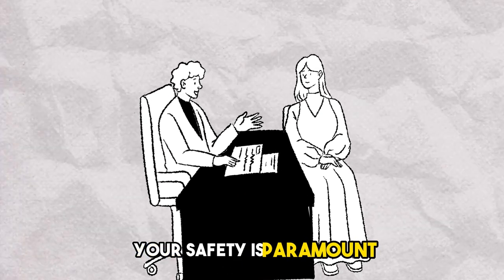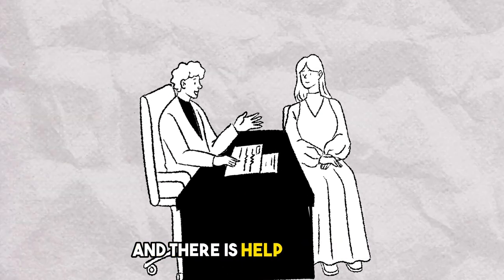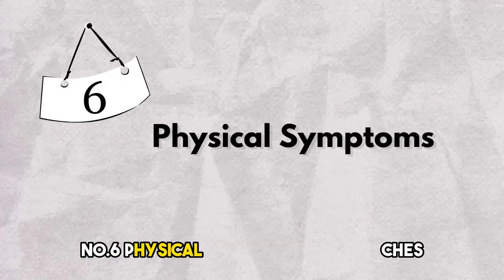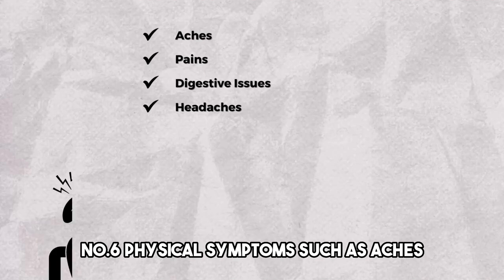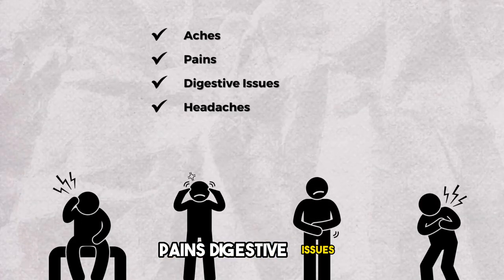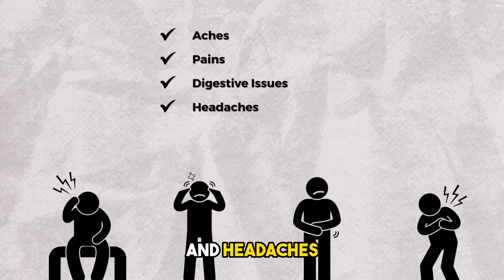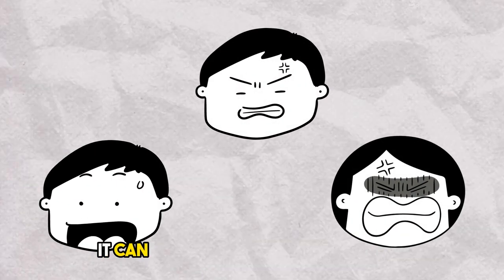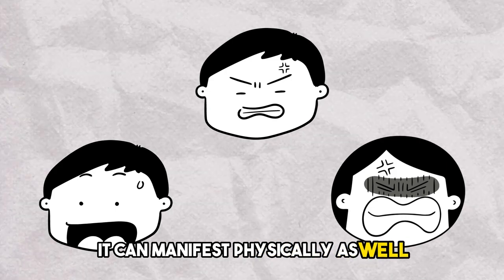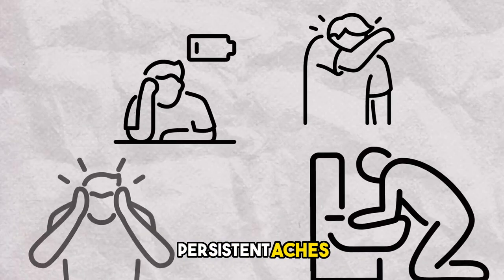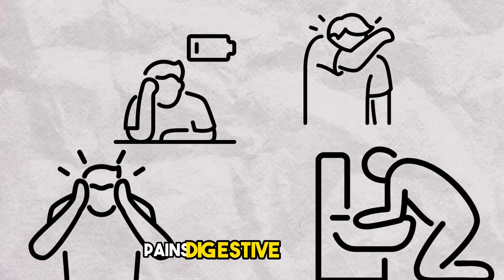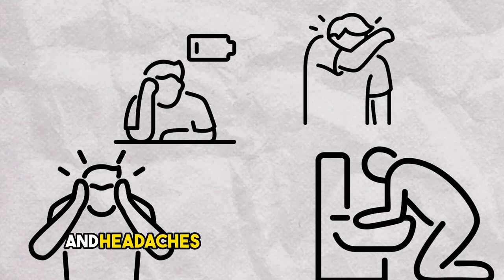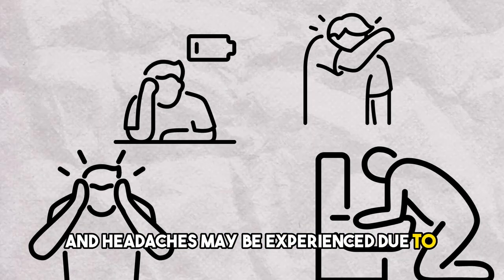Sign number six: physical symptoms such as aches, pains, digestive issues, and headaches. Depression doesn't only affect our emotional well-being; it can manifest physically as well. Persistent aches, pains, digestive problems, and headaches may be experienced due to depression. What sets these symptoms apart from general medical conditions is their resistance to treatment.